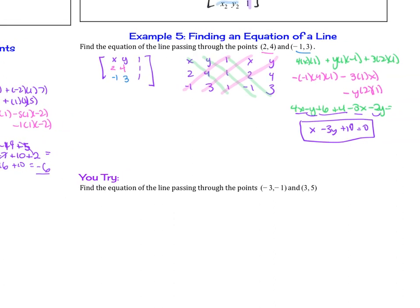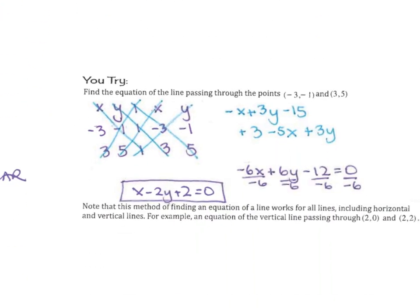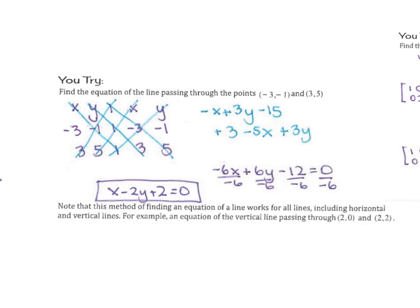So try this example here. Find the equation of the line passed into the points negative 3, negative 1, and 3, 5. So if you tried it out, you would have gotten the equation x minus 2y plus 2 equals 0.